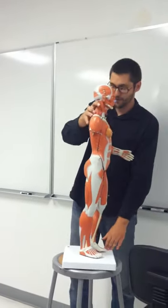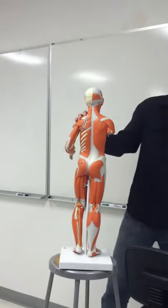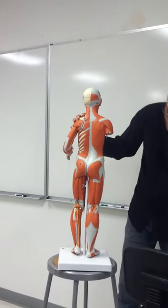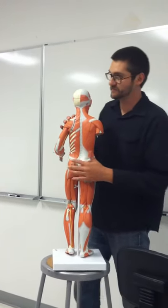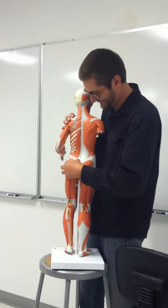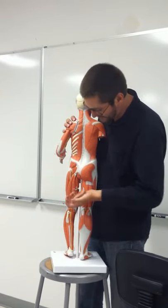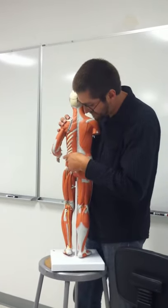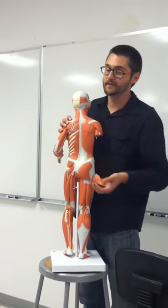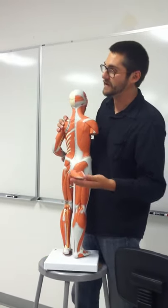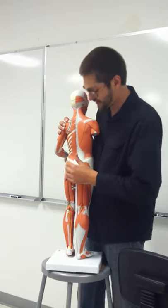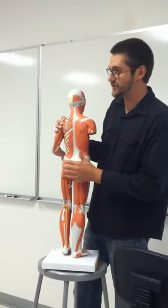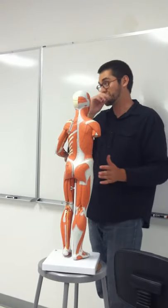Going posterior on the model, we see the gluteal muscles. Gluteus maximus is the big butt muscle. Deep to gluteus maximus are gluteus medius and minimus, but don't worry about those — just know gluteus maximus. You can scratch gluteus medius and minimus off your list.